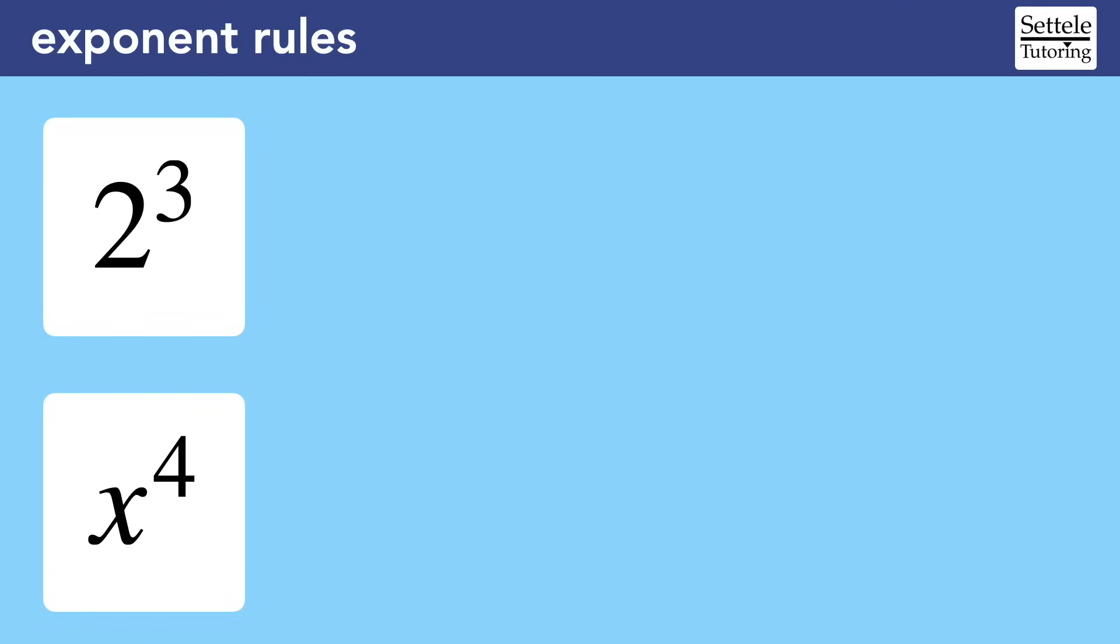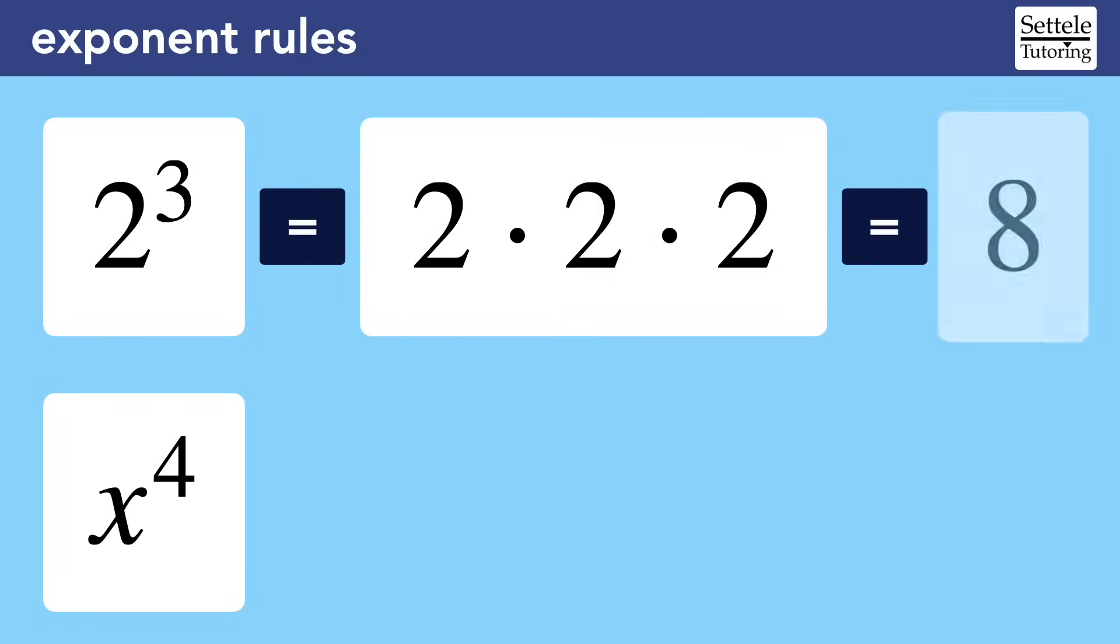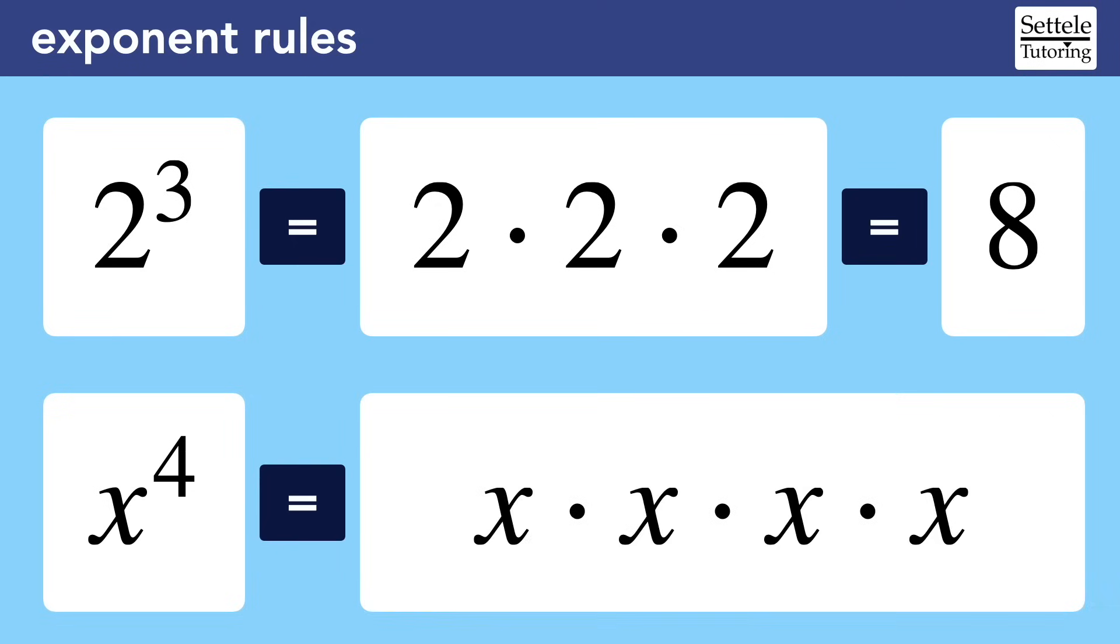First, remember that an exponent is a shorthand for multiplication. 2 to the 3rd means that we're multiplying three 2s together, which would equal 8. Similarly, x to the 4th is the same as multiplying four x's together. You should also know that the 2 and x are called the base of the exponent.